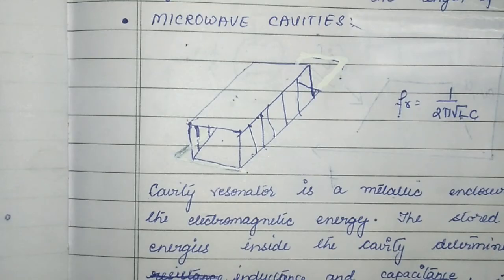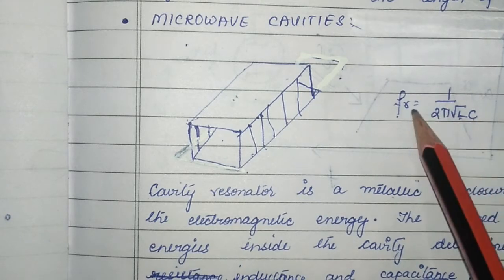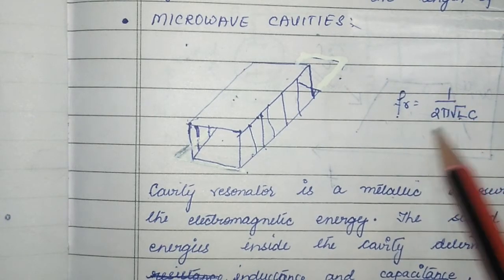A resonant cavity functions like an LC tank circuit — inductance and capacitance connected in parallel. When a resonant cavity is excited, it generates damped oscillations based on the formula: FR = 1 / (2π√LC).